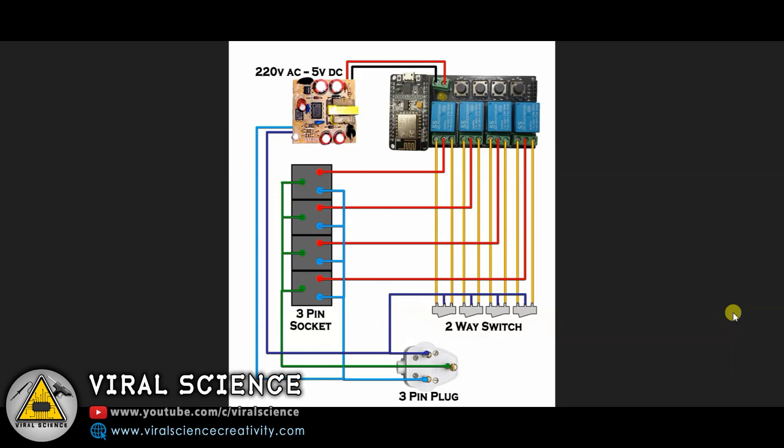So friends, this is the circuit diagram of our today's project. You can see all the components over here. First, we have this PCB board which we made. Then we have this 220V AC to 5V DC converter module. Then we have the 3-pin sockets and we have the 3-pin plug. And these are the 2-way switch with 3-pin connection.